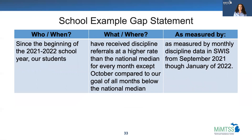Here's an example at the school level. Since the beginning of the 2021-2022 school year, our students have received discipline referrals at a higher rate than the national median for every month except October,